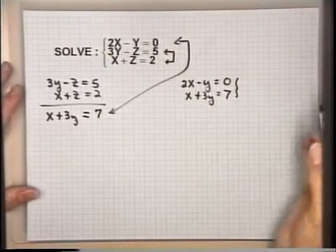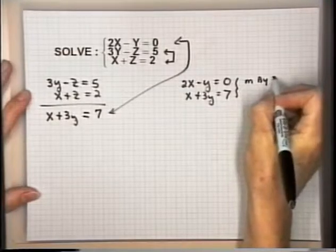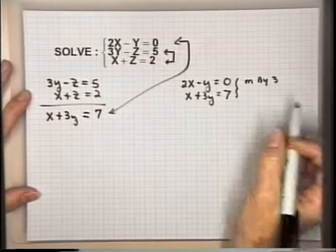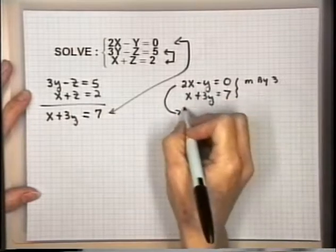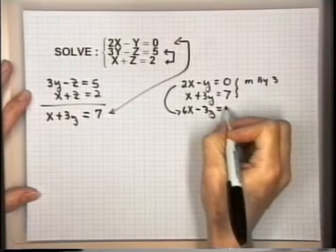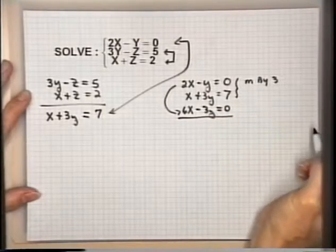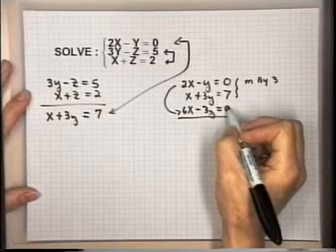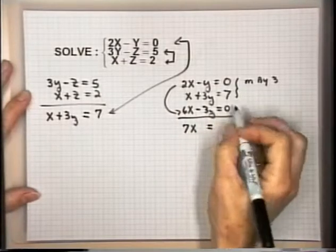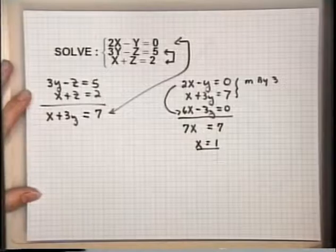To solve the system 2x minus y equals 0 and x plus 3y equals 7, I'll multiply the first equation by 3: 3 times 2x is 6x, 3 times negative y is negative 3y, 3 times 0 is 0. Adding to the second equation: x plus 6x is 7x; the y's are eliminated; equals 7 plus 0 is 7. Dividing both sides by 7, x equals 1.